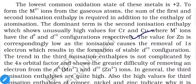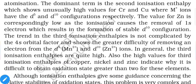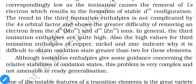The value of Zn is correspondingly low for the second ionization enthalpy, as ionization causes removal of a 4s electron which results in the formation of a stable d¹⁰ configuration. The third ionization enthalpies are not complicated by the 4s orbital factor and show the greater difficulty of removing an electron from d⁵ and d¹⁰ ions. The high values of third ionization enthalpies for Cu, Ni, and Zn indicate why it is difficult to obtain oxidation states greater than +2 for these elements.